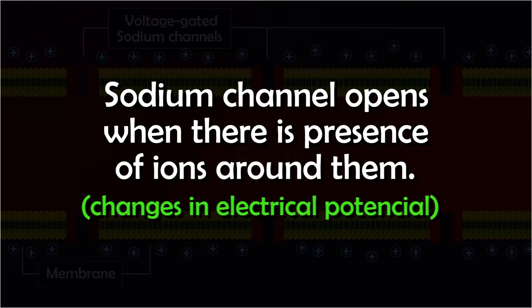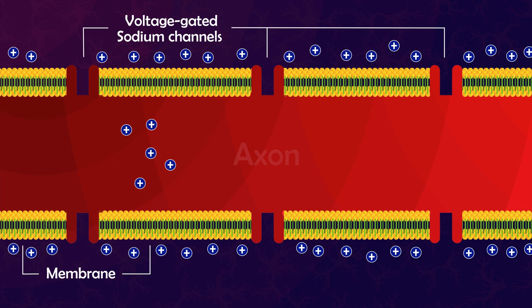In this case, when a weakened impulse reaches such a channel, they are triggered to open, allowing positive ions to enter and subsequently increase the impulse strength back to its original condition. This allows the impulse to maintain strength until it reaches its intended destination. That's how it normally should function.